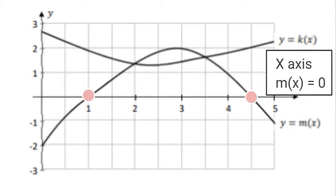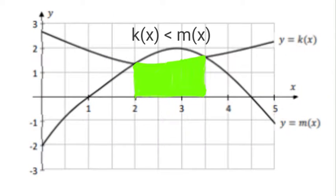So we can look at the graph here and we can look below the k of x graph. And you can see the m of x is above it here for that segment, down below here. So the two values here will be 2 and 3.5.